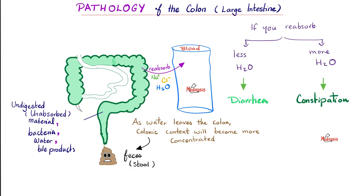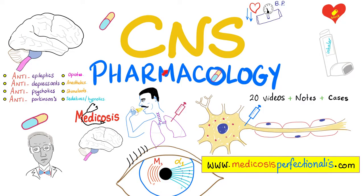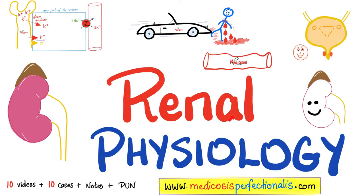The balance between absorbing water or not is why you can get diarrhea or constipation. When we're talking about the gut, we say absorption; when we talk about the kidney, we say reabsorption. What ends up in the toilet from your colon includes water, non-digested non-absorbed food or particles, dead epithelium, bacteria, etc. Don't forget to listen to your natural urge — train yourself to poop after your first meal of the day, to take advantage of your gastroileal, gastroenteric, and gastrocolonic reflexes, which boost the motility of your gut. If you abuse laxatives for years, you will lose the natural urge, your colon will be atonic, and you will end up chronically constipated. If you like this video, check out my CNS pharmacology course and renal physiology course at medicosisperfectionitis.com.